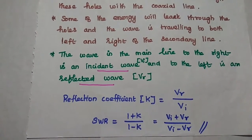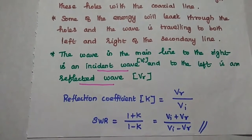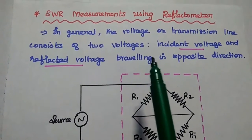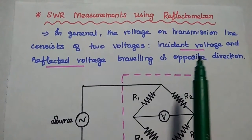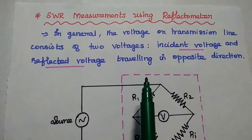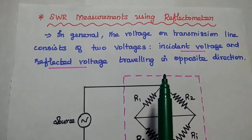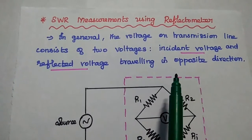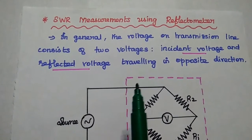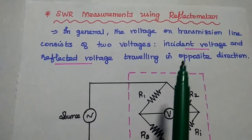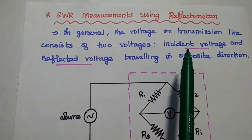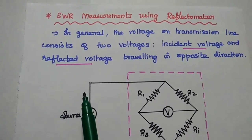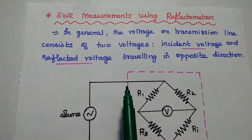The last method is SWR measurement using a reflectometer. In general, the voltage on the transmission line consists of two voltages: incident voltage and reflected voltage, both traveling in opposite directions. By separating the incident voltage and reflected voltage, we can easily measure the standing wave ratio.